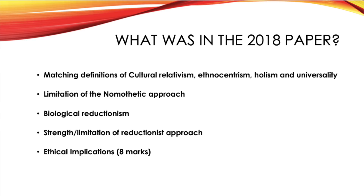What was in the 2018 paper for this section? There was a question where you had to match the definitions of cultural relativism, ethnocentrism, holism and universality. There was also a question on the limitation of the non-scientific approach, a question on biological reductionism where you had to give a strength and limitation of the reductionist approach, and then there was an eight mark question on ethical implications.